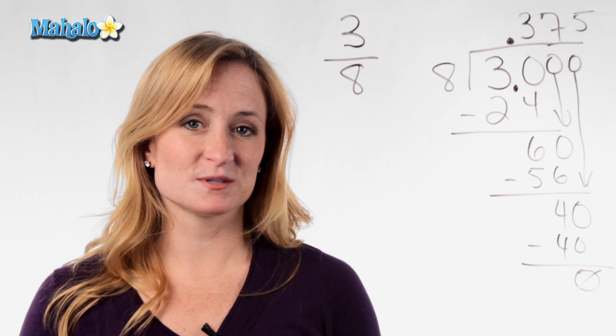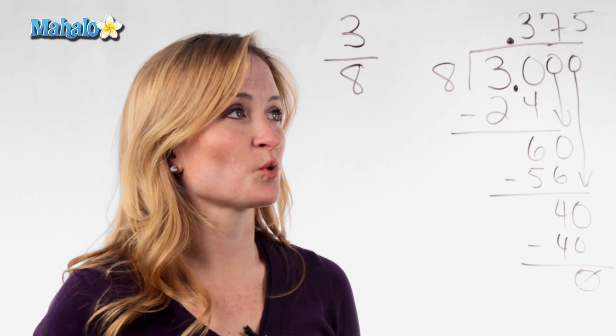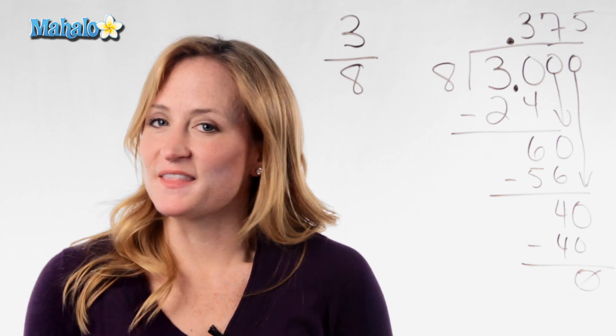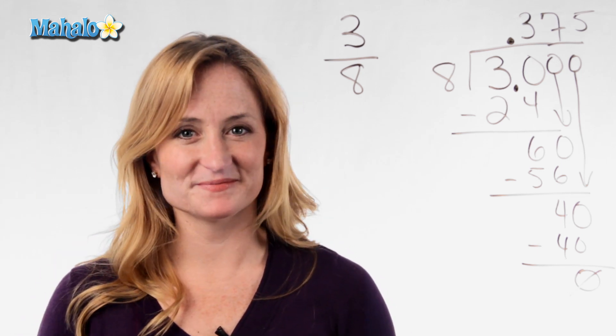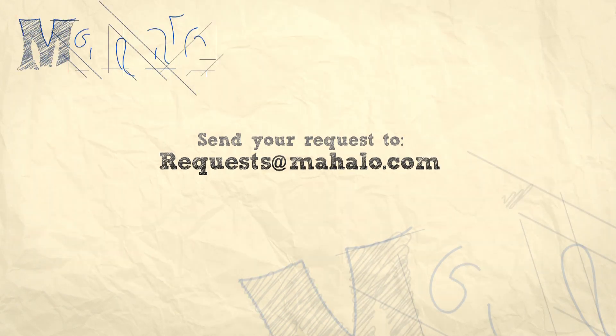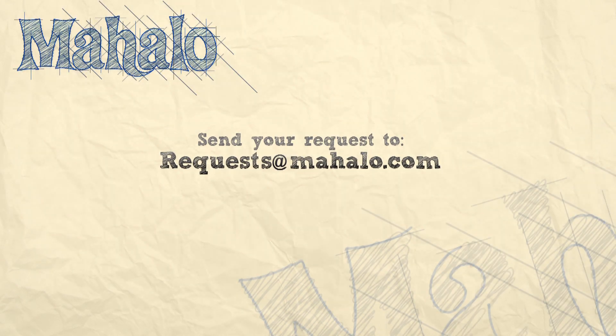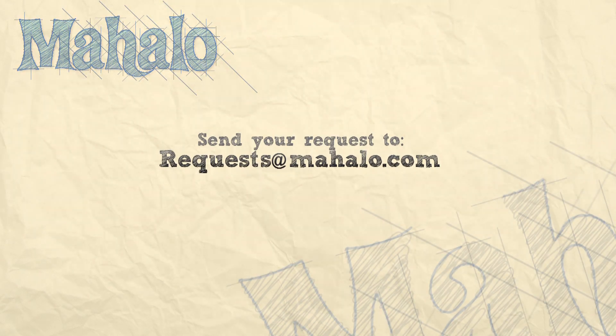So converting 3/8ths to a decimal is .375, and that's how you convert a fraction to a decimal. Thanks for learning with me today. If you'd like to learn more about this topic or anything else having to do with math, please feel free to click the links on the screen. And if you have a specific problem or request, you can email them to requests at mahalo dot com. See you next time.